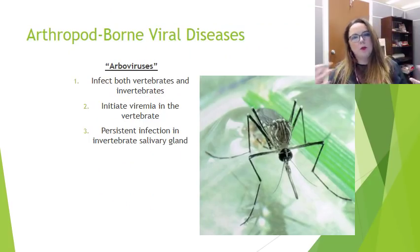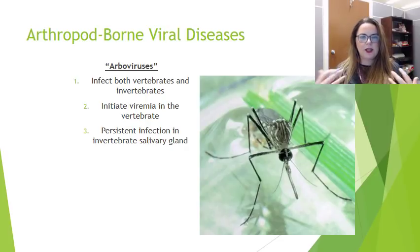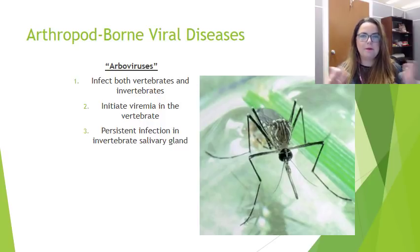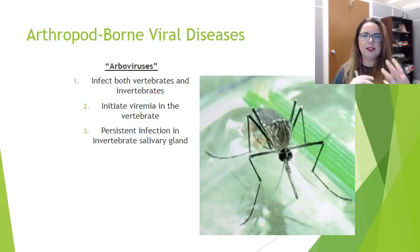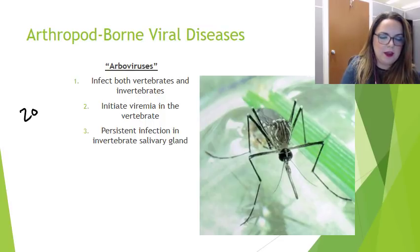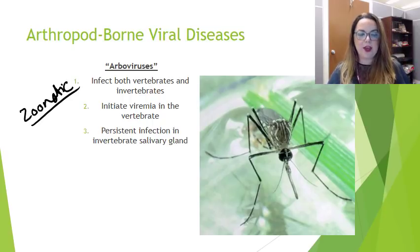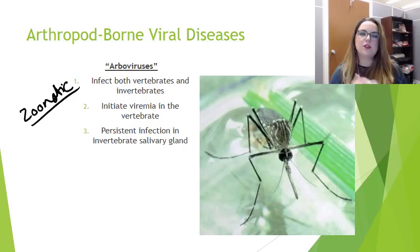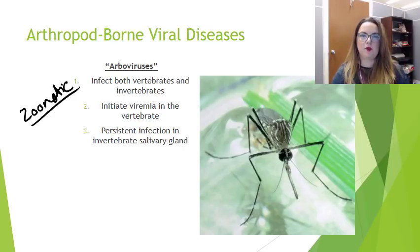So I keep saying arboviruses and arthropod viruses, which at this point you've probably figured out means a virus that's spread by an arthropod. But it's actually more than that. If a virus is an arbovirus, it has to have three things it's able to do. First, it has to be zoonotic — it has to be able to infect more than one species of animal, because it has to be able to infect both the arthropod and us. So it has to be able to infect both vertebrates and invertebrates.